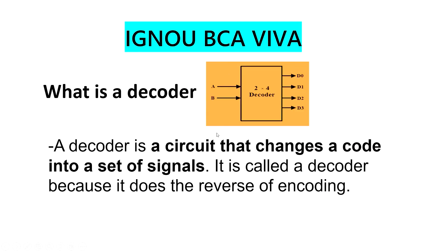What is a decoder? A decoder is a circuit that changes a code into a set of signals. It is called a decoder because it does the reverse of encoding. There are 2 inputs and multiple outputs — it can be 2-to-4, or 3 or 4 inputs. Basically, whatever is encoded, the decoder will decode it.